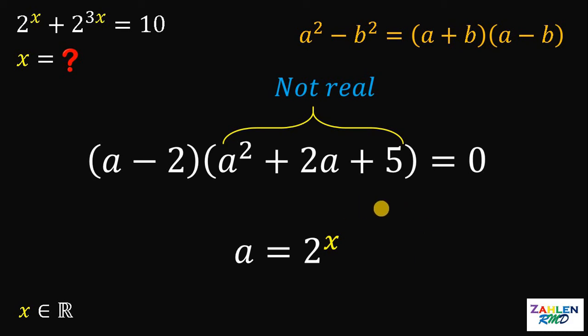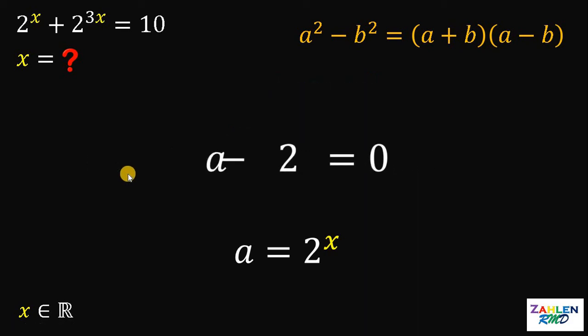Therefore, the only factor that will give us a real value for x is this factor a minus 2 equals to 0, wherein this a must be equal to 2.